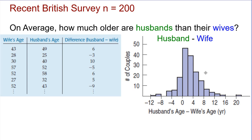Sure enough, if we look at the histogram for the differences between husband and wife's ages for each married couple, the mode and mean looks like it's going to be very close to two years, which is in a positive direction. So on average, the difference between husband and wife pairs was about a two-year age difference. Of course there are some outliers — there were some husbands that were about 20 to 22 years older; there was one out of the 200 couples sampled.